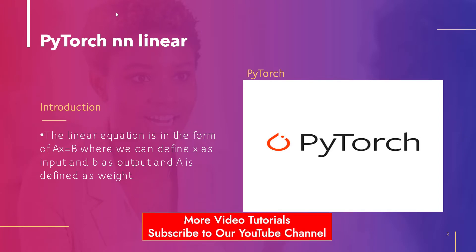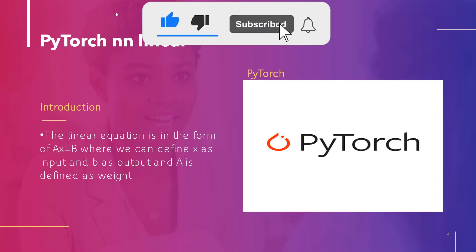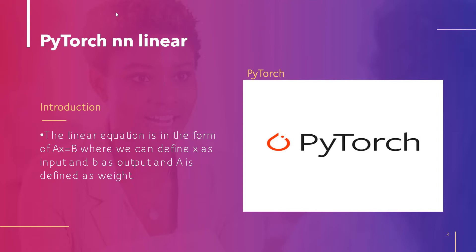Before moving forward, we should have a piece of knowledge about the linear equation. The linear equation is in the form of Ax = b, where we can define x as an input, b as an output, and a is defined as a weight. PyTorch nn.Linear is a module which is used to create a single layer feed forward network with n inputs and m outputs.